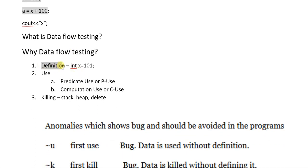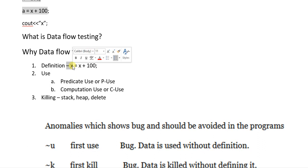In data flow testing we have some basic terms. The first term is definition. Definition is when we initialize a variable with some content. Like here, we are defining the variable X and initializing it with the value 101. Similarly, if we write X = X + 100, it is again a definition because we are replacing the initial contents of X with new contents.